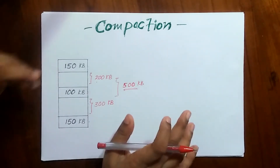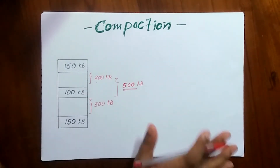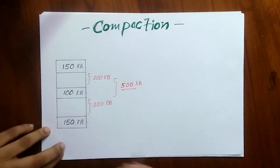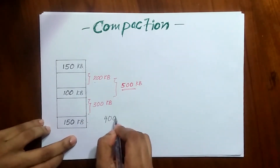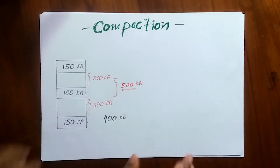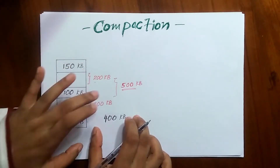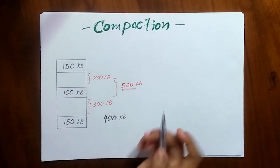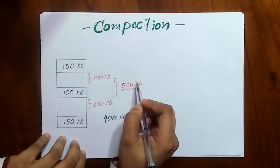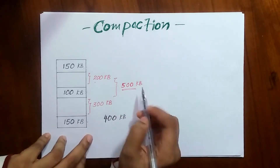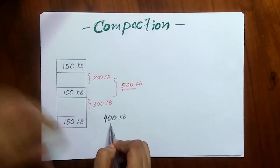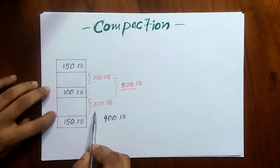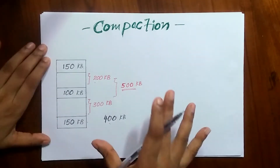The question I'm going to ask is: what will happen if a process arrives with a size of 400 KB? We have to place this 400 KB process, but even though we have 500 KB of space left, we cannot place it because one partition is 200 KB and the other is 300 KB. So there is a problem.